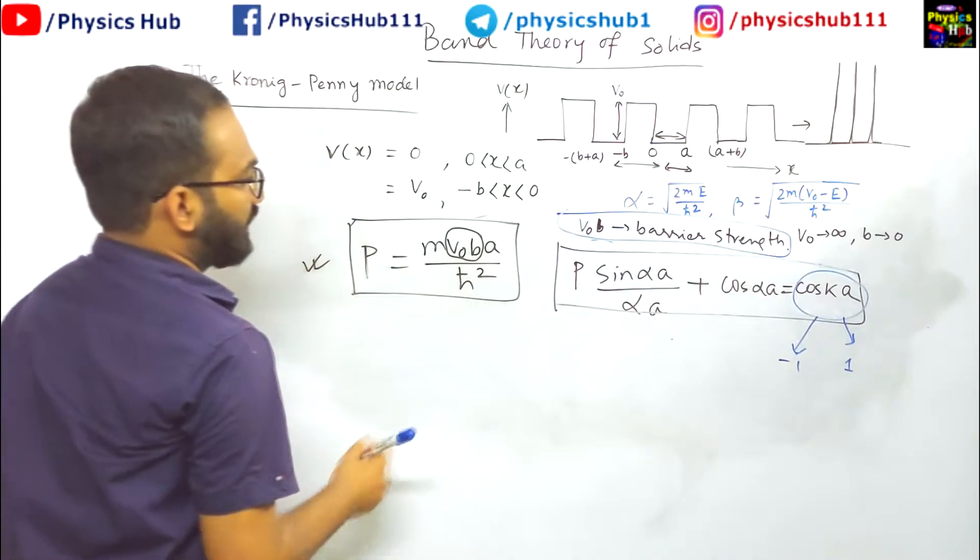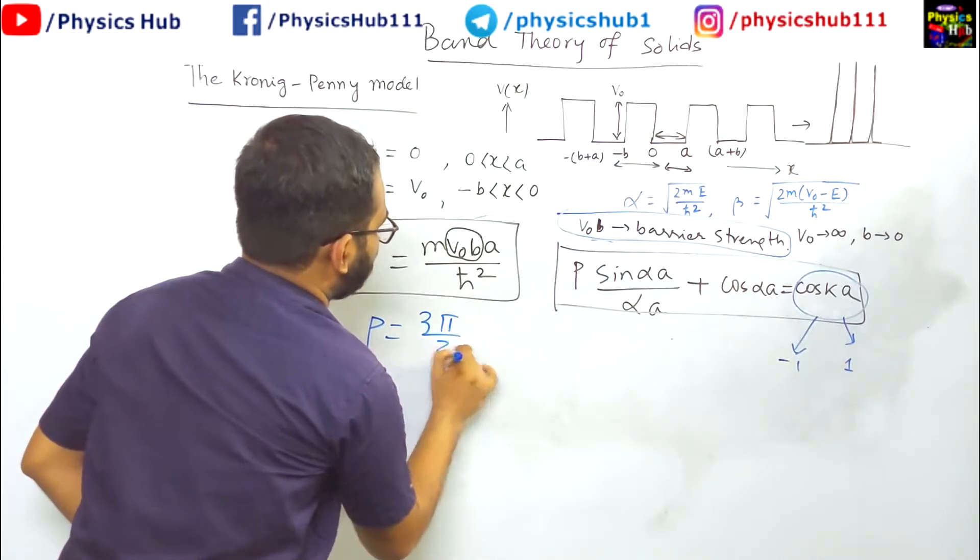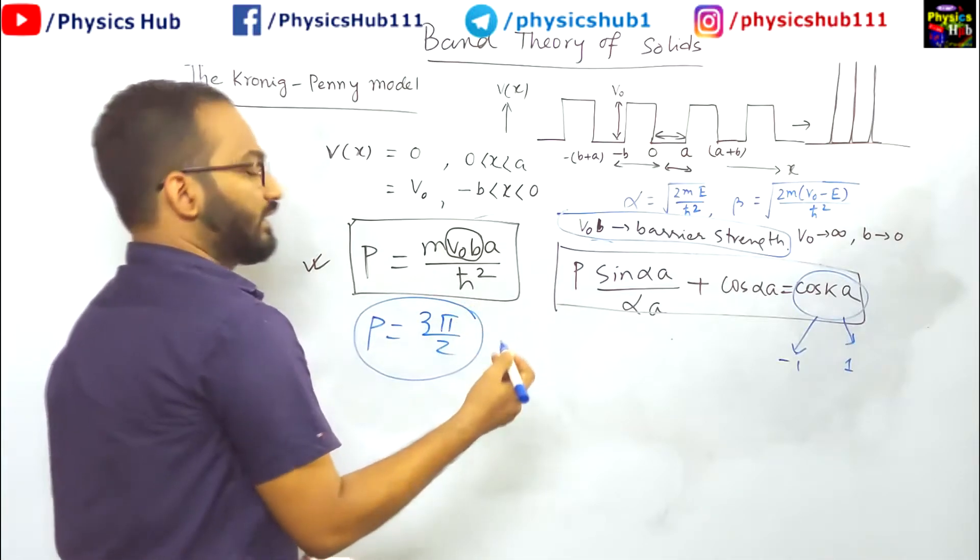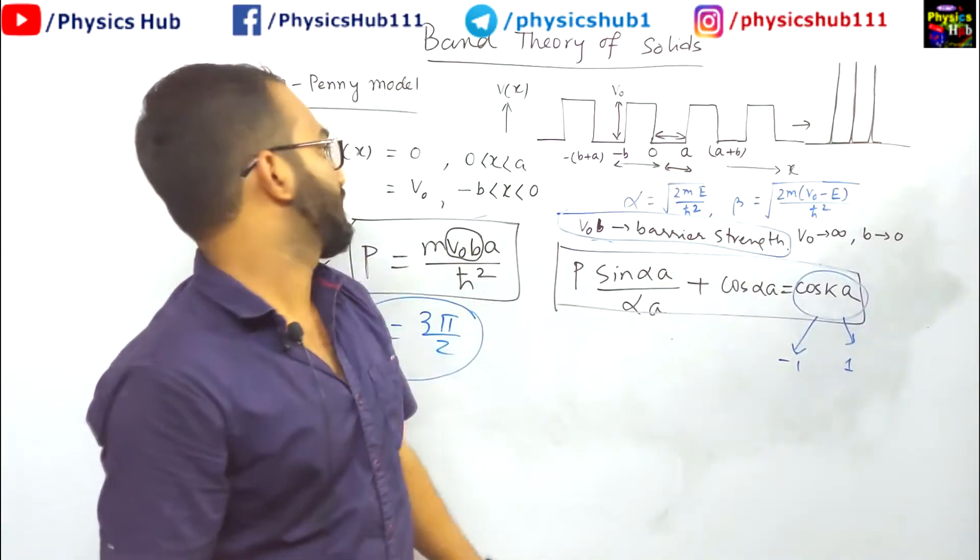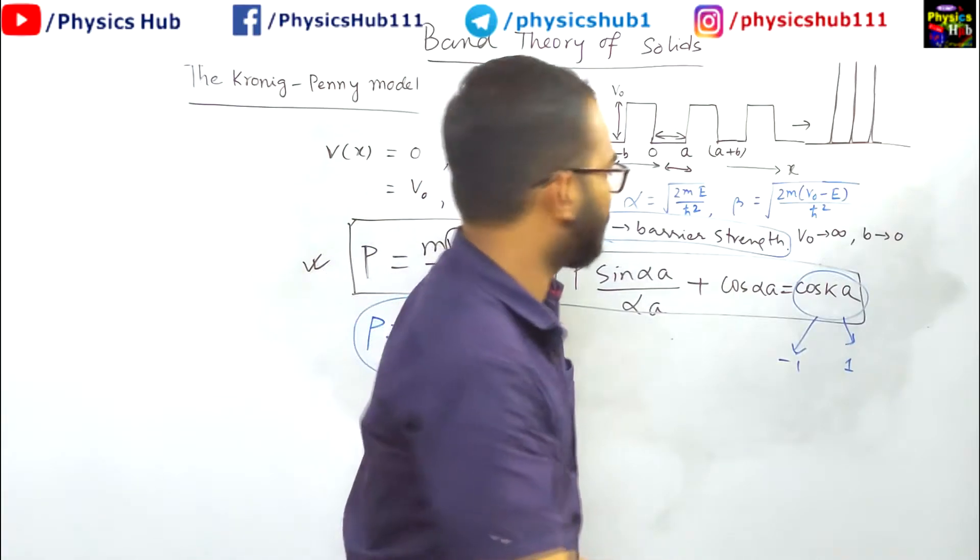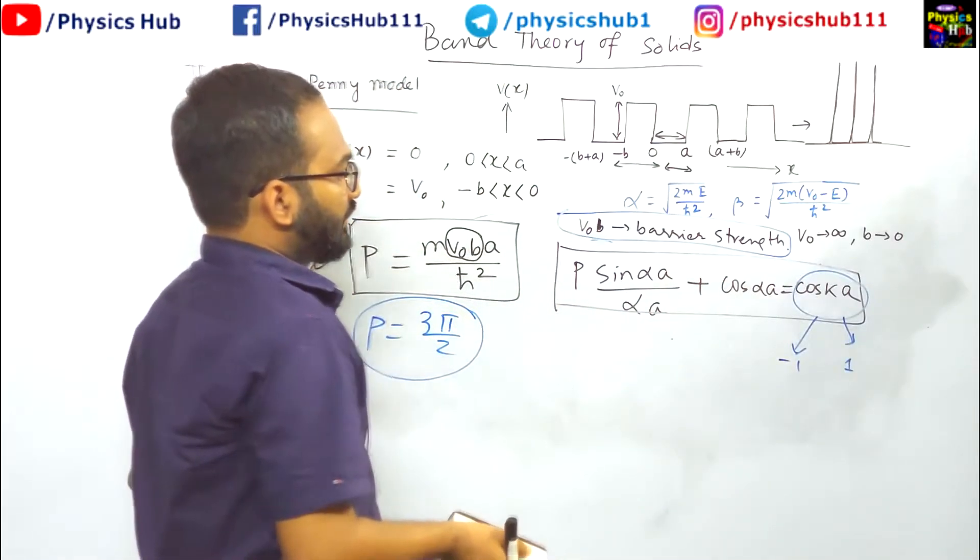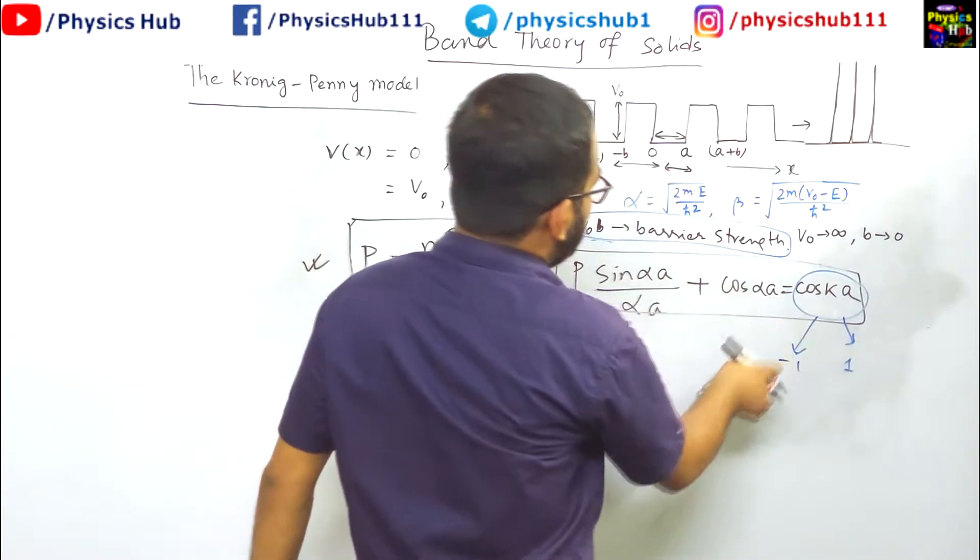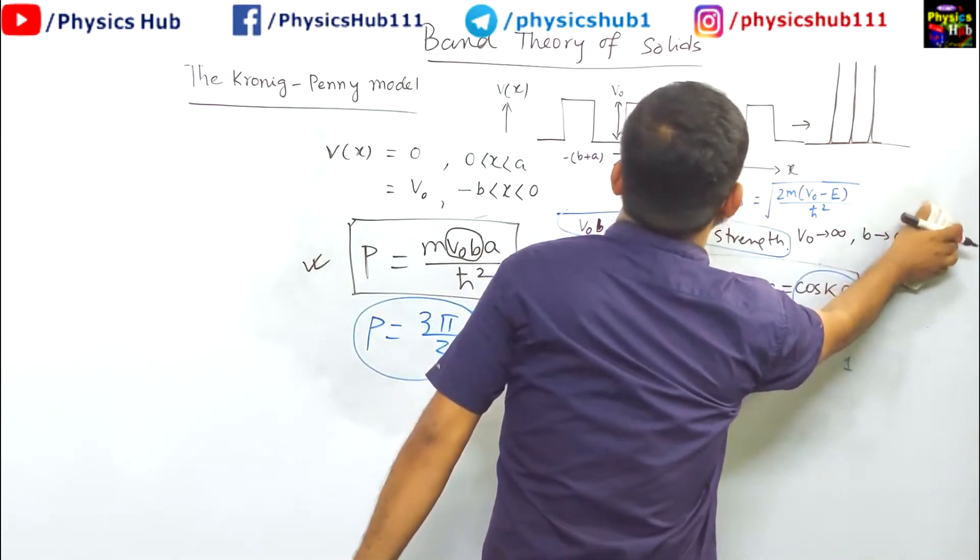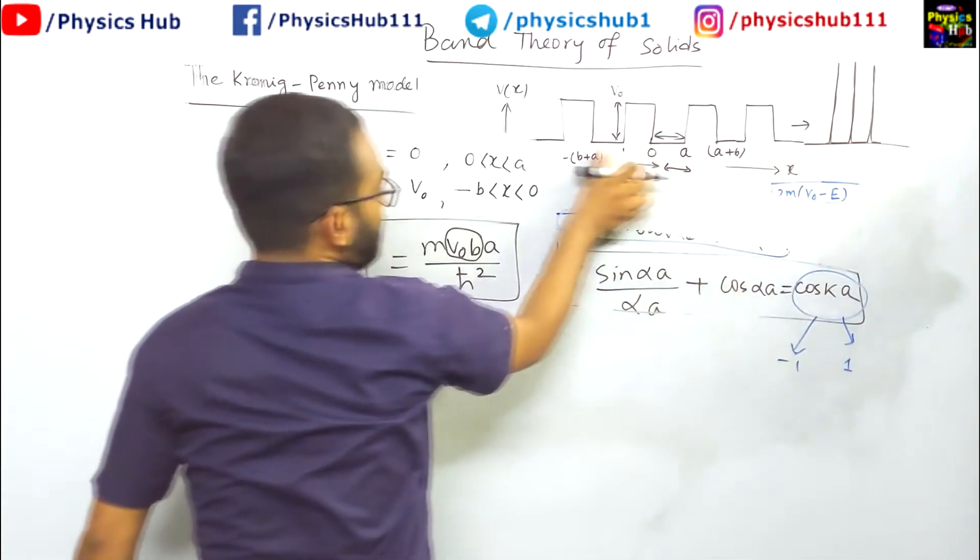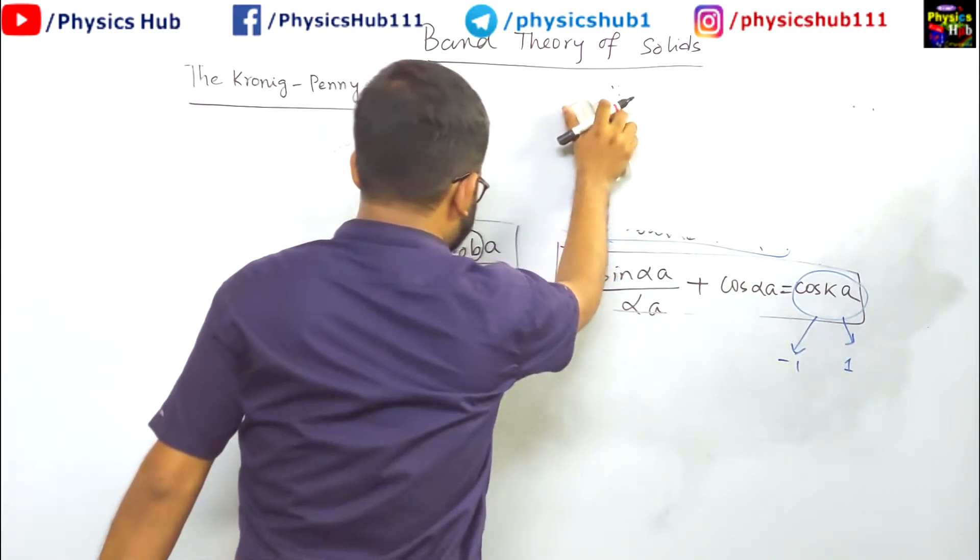Now this function left hand side is plotted for value of p equals 3 pi by 2. This value, the standard value we can take with other values also and the form of the graph will change. We will see to it. Let us try to draw this. Obviously the right hand side is a cos function, so it will have a cos type of function. We are going to p sin alpha by alpha plus cos alpha. If you plot it, a kind of sinusoidal function you will get. I need bigger space.